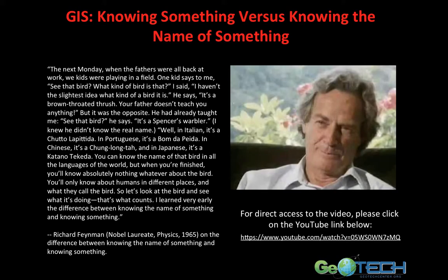Richard Feynman was not specifically talking about geographic information systems — nevertheless, the premise is true. Knowing something versus knowing the name of something. As we proceed through this class and study geospatial technology, we need to remember we're not just making maps. We're not just putting a tree on a map and saying the oak tree is over there. We are trying to gather a lot of information about something and solve a problem.